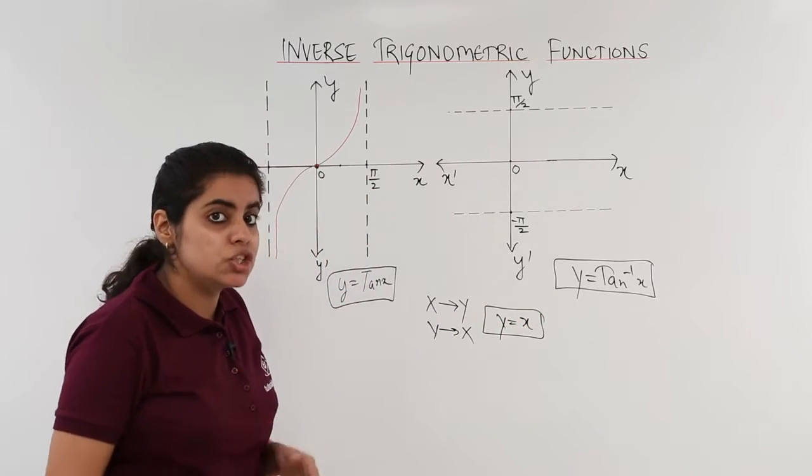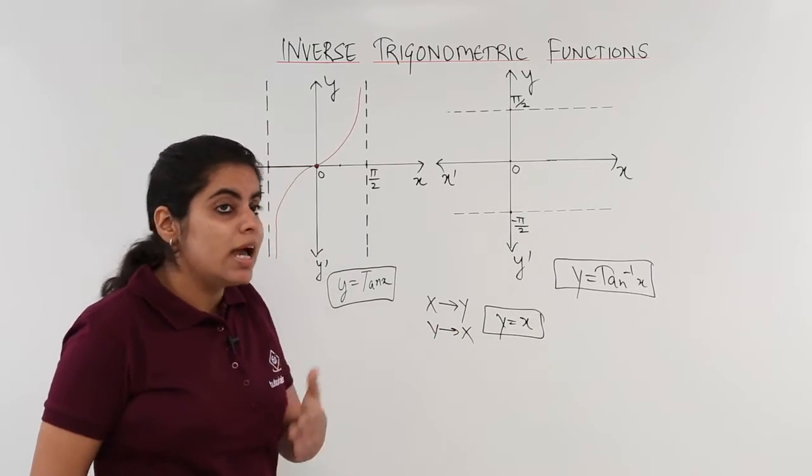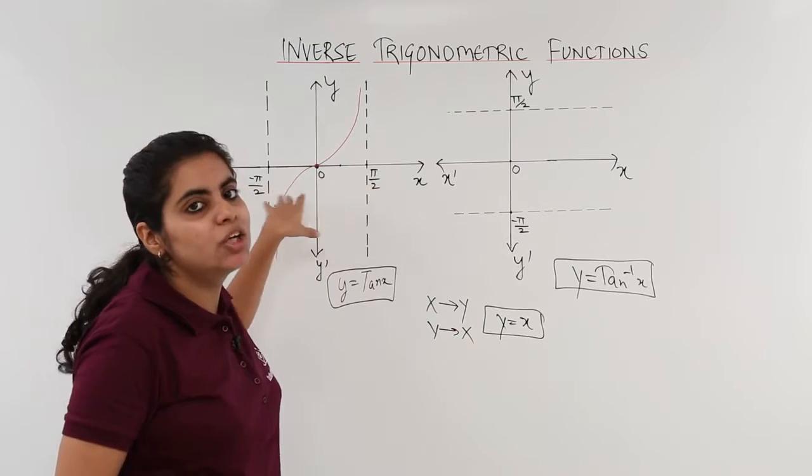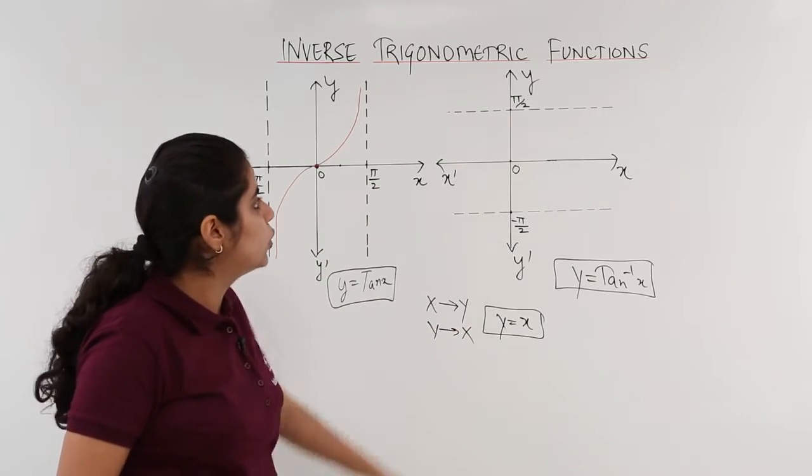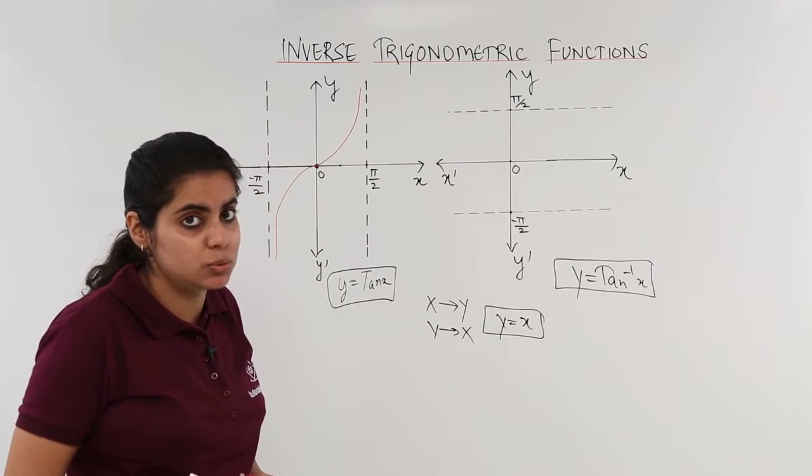The first thing, change the x axis with y. X axis was what? X axis had pi by 2, 0, and minus pi by 2. You changed it with y. Now, y axis has 0, minus pi by 2, and pi by 2.